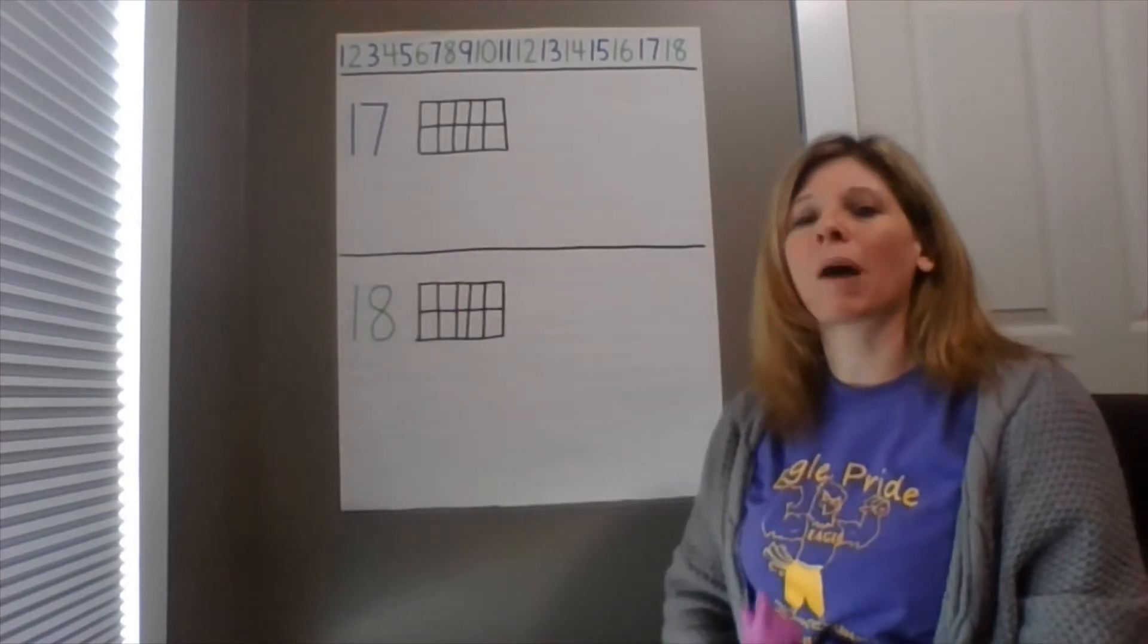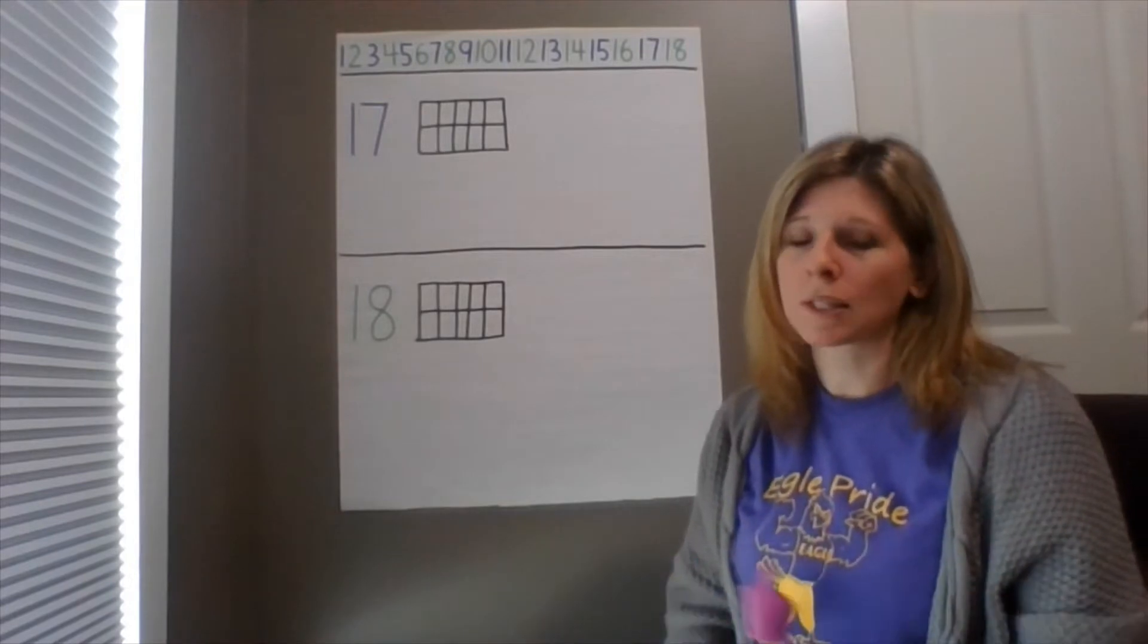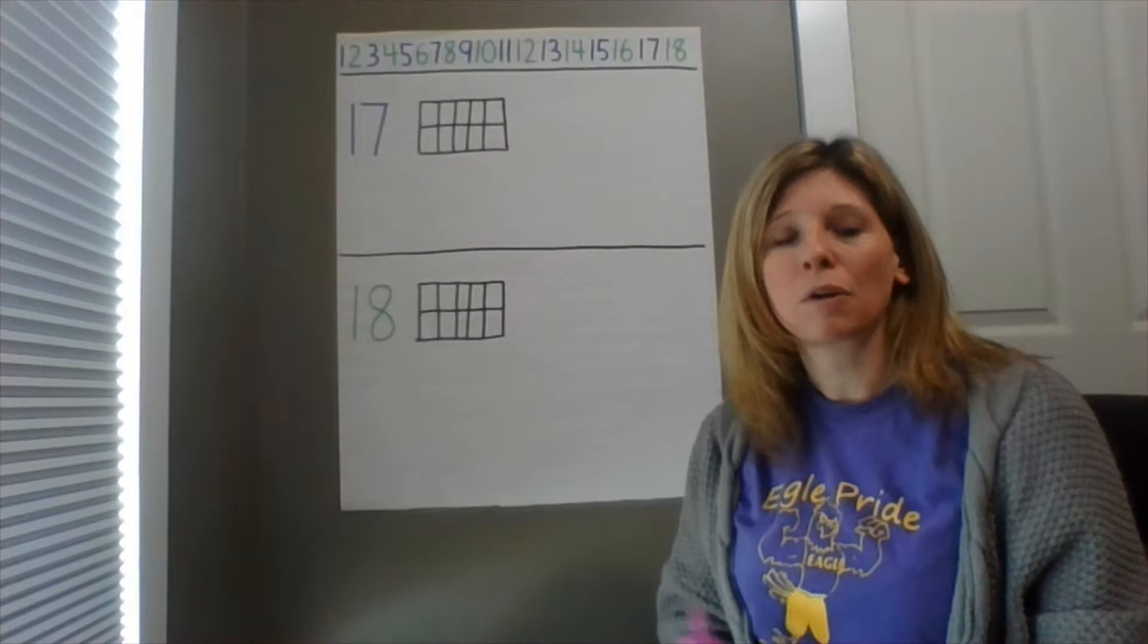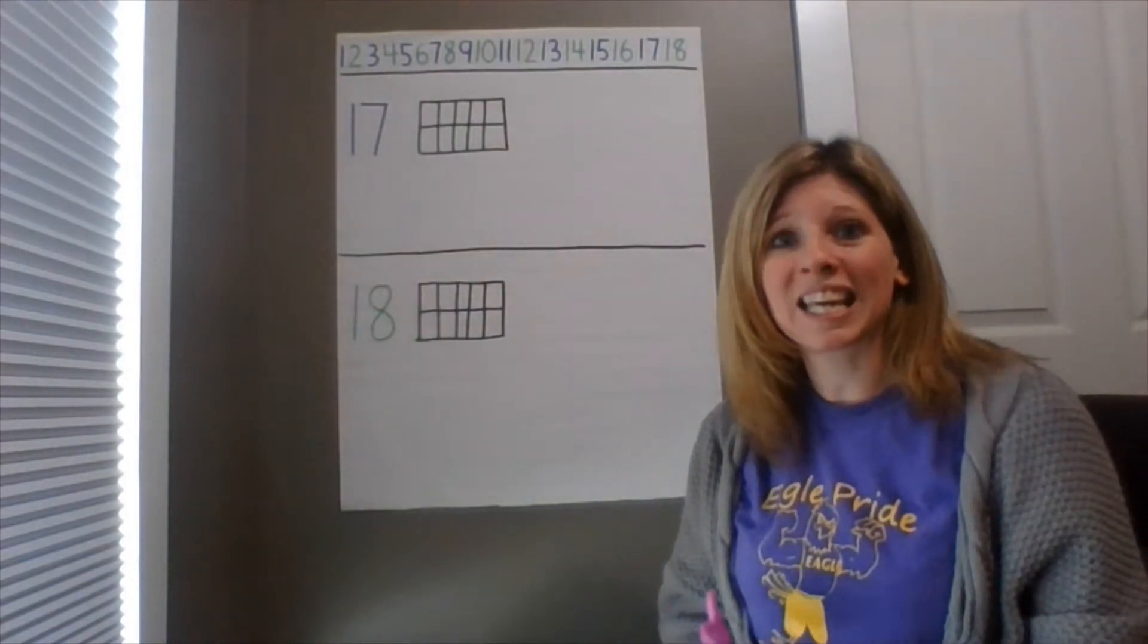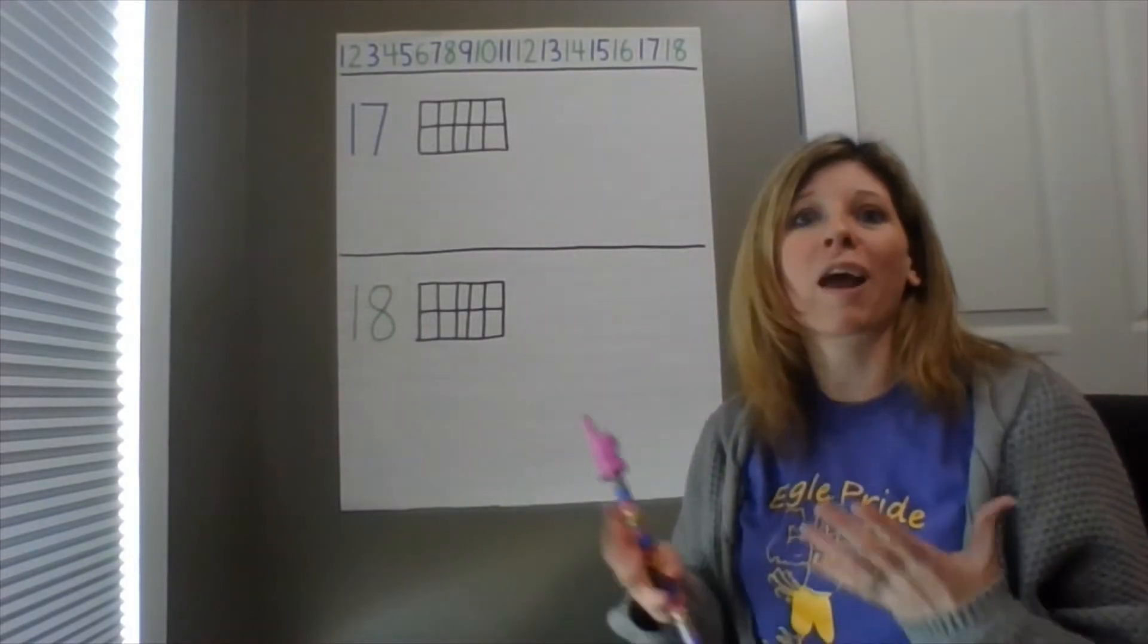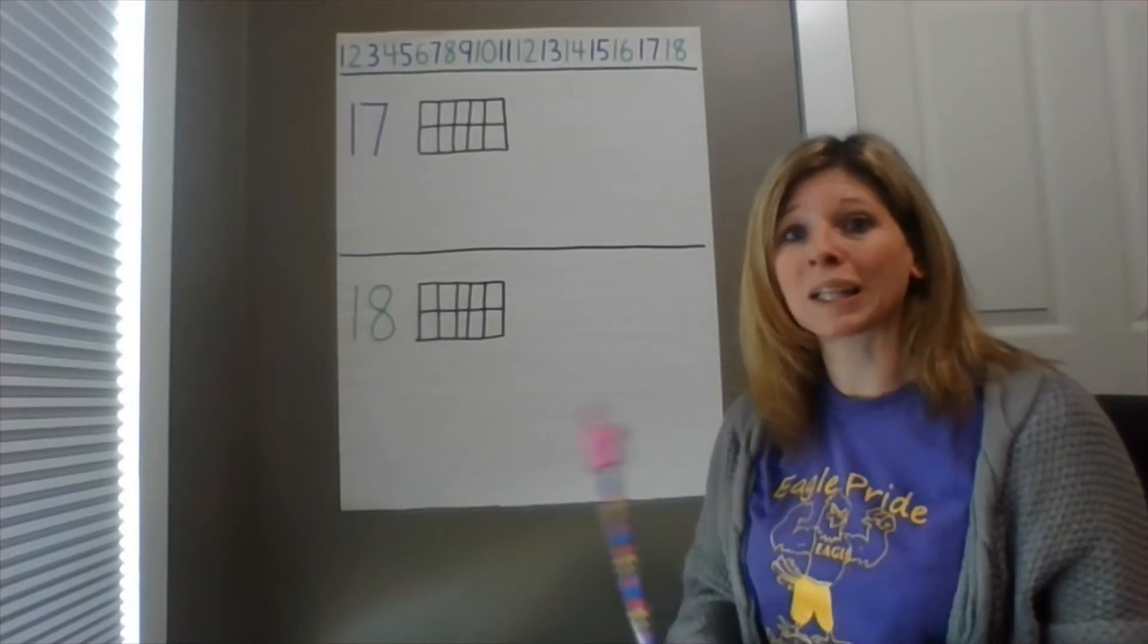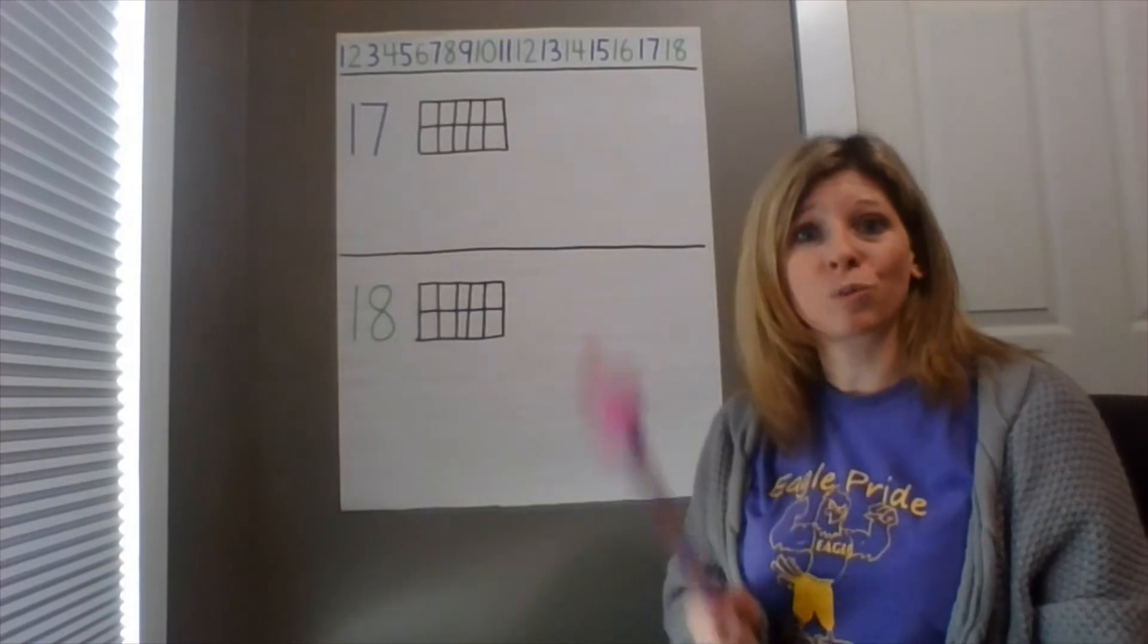So we are going to start by talking about the number 17 today. Just like with our other lessons, please make sure that you have a 10 frame ready. Draw a 10 frame if you don't have one, and you will need at least 18 objects to use for counters. You can use pennies, objects, toys, whatever you want. If you don't have your 10 frame or at least 18 objects, pause the video and make sure you get them so you're ready to learn.